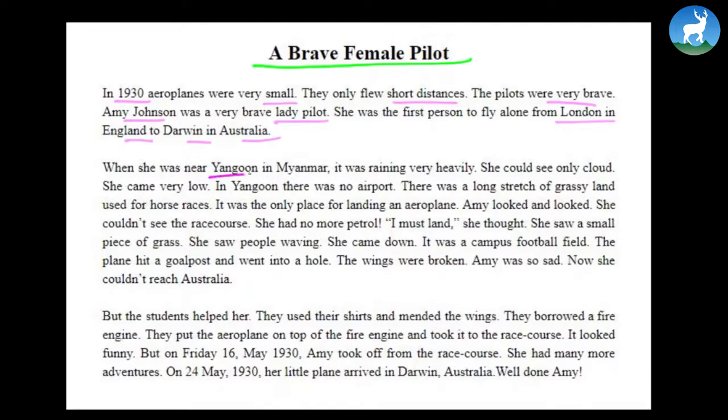When she was near Yangon in Myanmar, it was raining very heavily. She could see only cloud. She came very low. In Yangon, there was no airport. There was a long stretch of grassy land used for horse races. It was the only place for landing an airplane. Amy looked and looked. She couldn't see the race course.